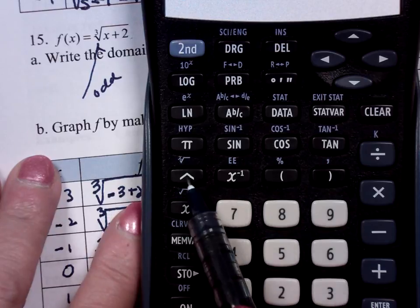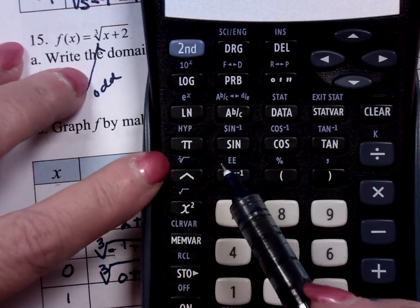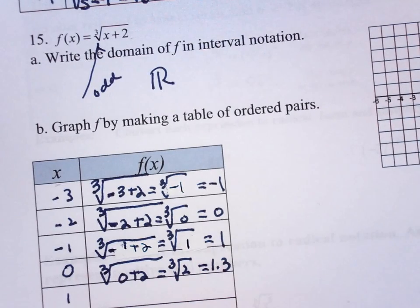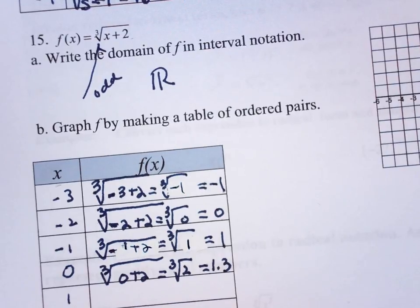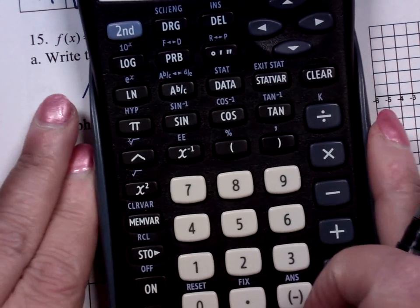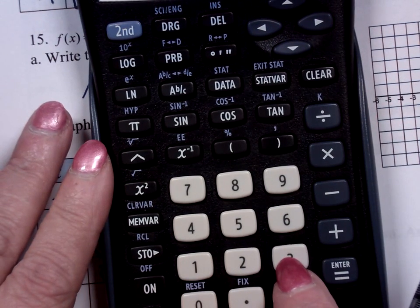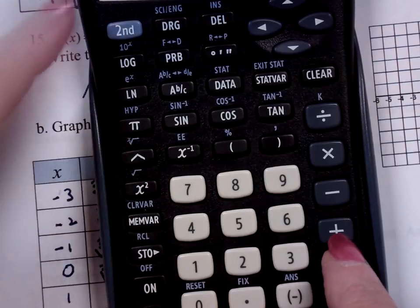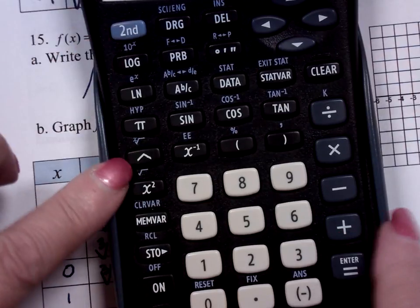Above this key right here. Do you see this little, this says x root. You can take any root. If I want a cube root, I'd say cube that key, which is second, upper carat.